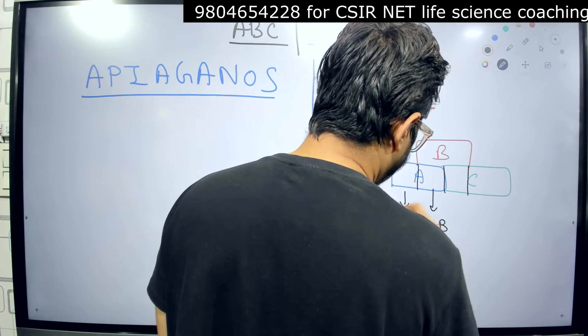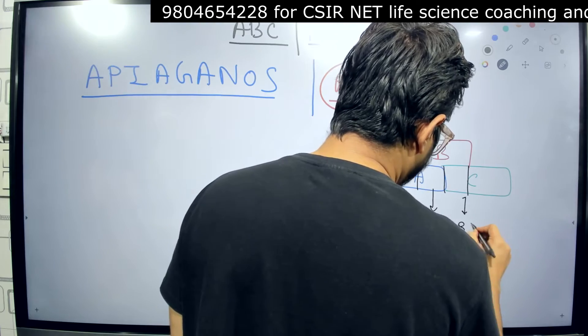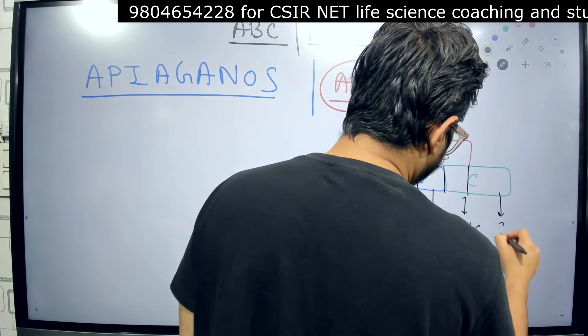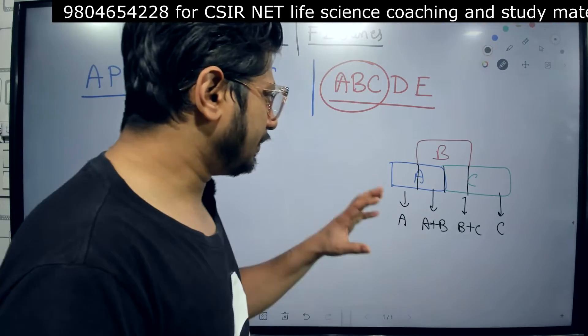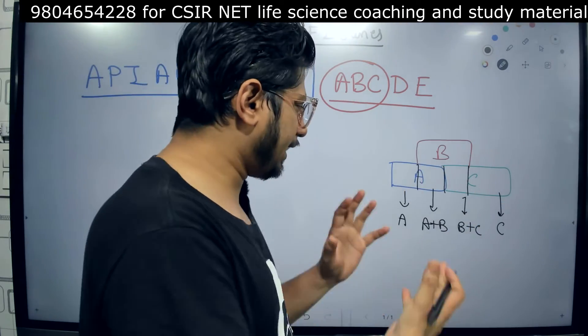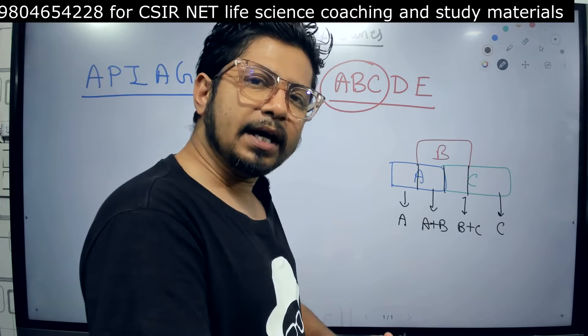What we have here is four different segments. The first segment is A only. The second segment is A plus B. The third segment is B plus C, and the last segment is C only. This is simple, right?